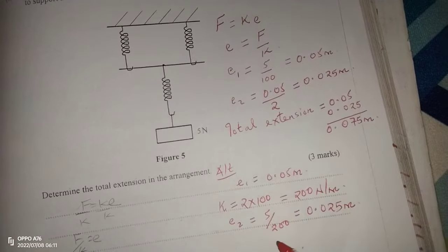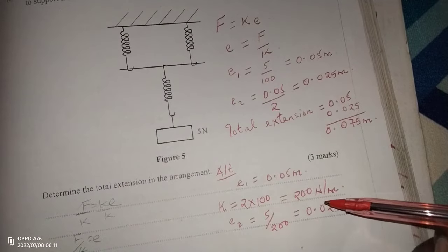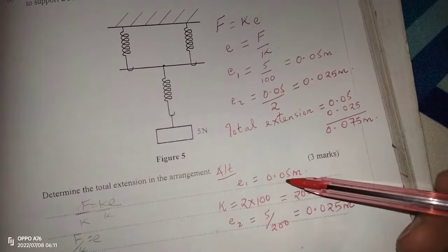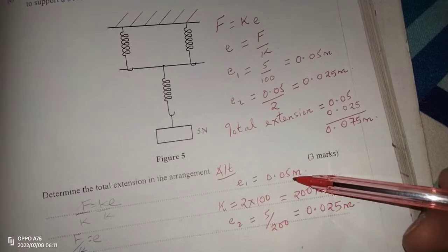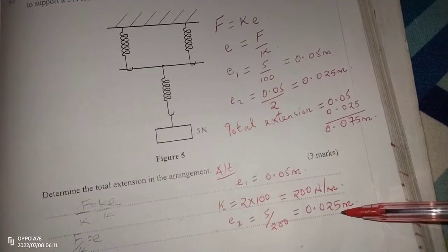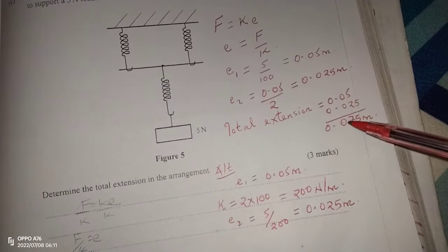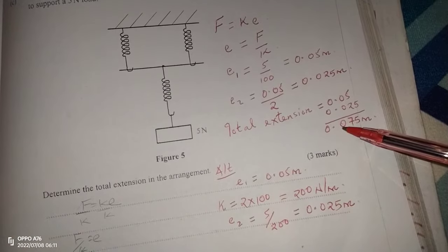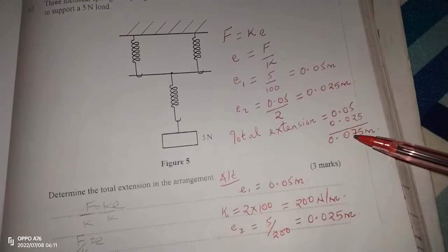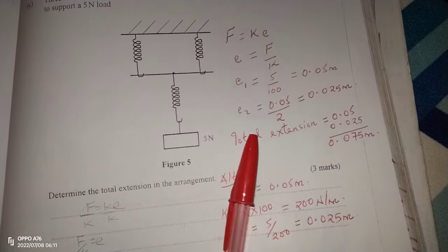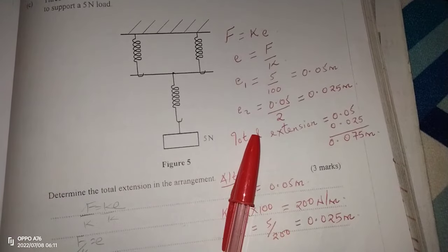Therefore, to get the total extension, we again add 0.05 and 0.025 meters and we get 0.075 meters. Remember to subscribe and to share our link with friends. Thank you.